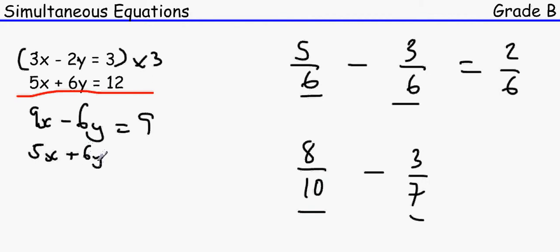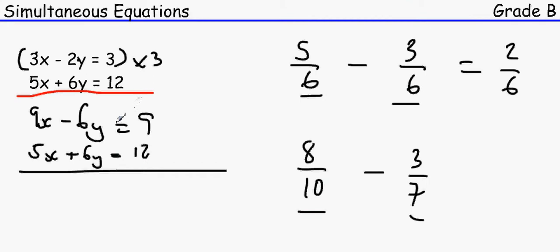Now we have minus 6y and plus 6y. To eliminate y, we add the two equations together, because minus 6 plus 6 equals zero. So 9x plus 5x equals 14x, minus 6y plus 6y equals 0, and 9 plus 12 equals 21.